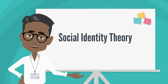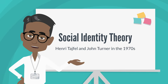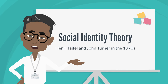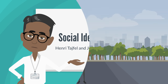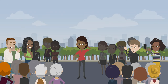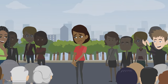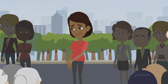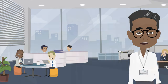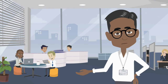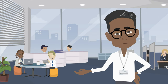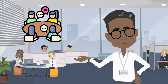Social Identity Theory, developed by Henry Tajfel and John Turner in the 1970s, is a psychological framework for understanding how individuals identify and behave within social groups. The theory posits that people have a fundamental need to belong and derive part of their self-concept and esteem from their group memberships.